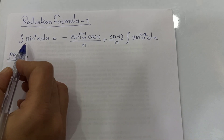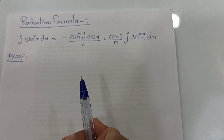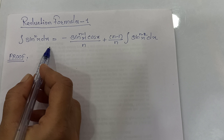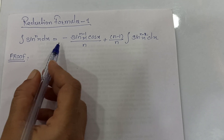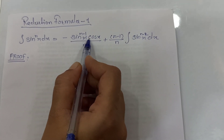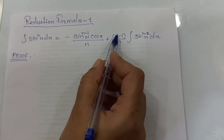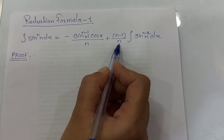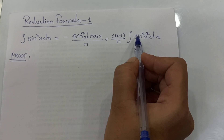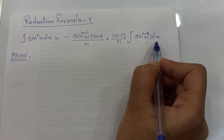The first reduction formula is: integration of sin raised to n x dx equals minus sin raised to n minus 1 x, cos x upon n, plus n minus 1 upon n, integration of sin raised to n minus 2 x dx.